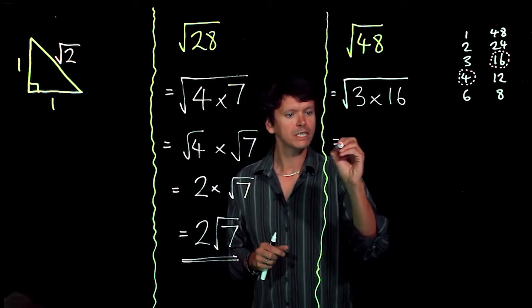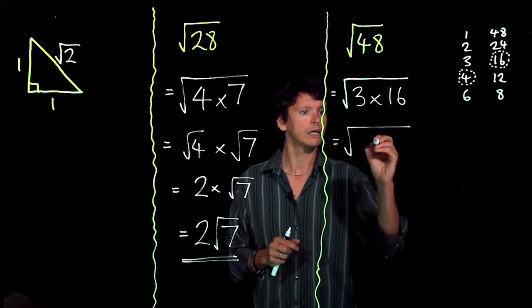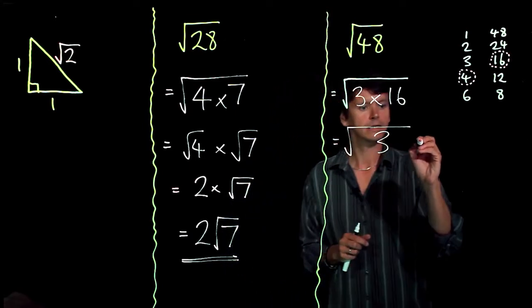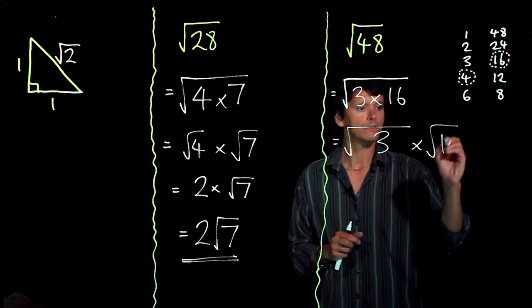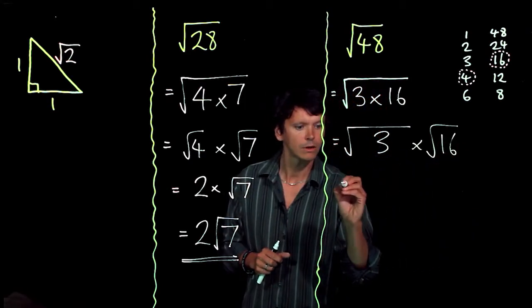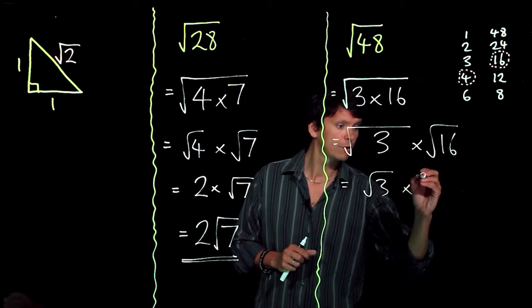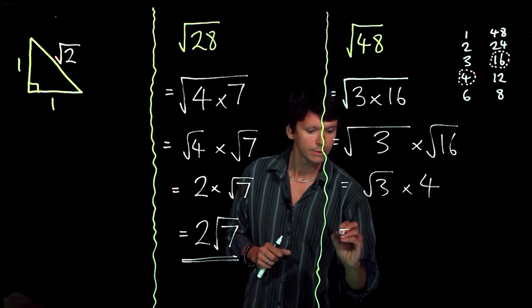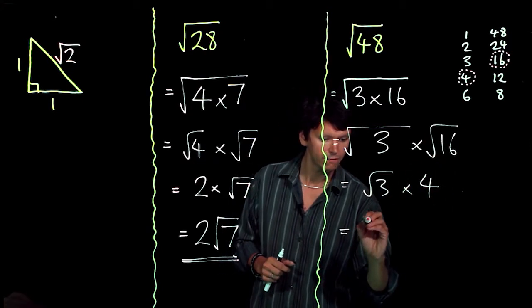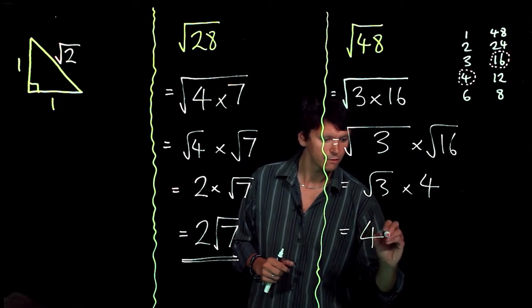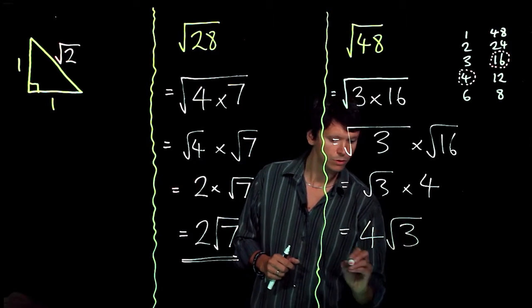From our rules of indices, that means that the square root of 3 times 16 is the square root of 3 times by the square root of 16, which equals root 3 times by 4. And I'm just going to flip that round because the standard convention for surds would be to write that as 4 root 3.